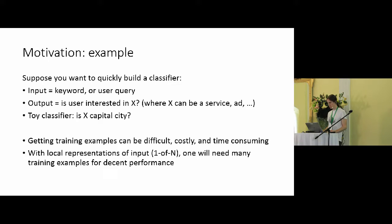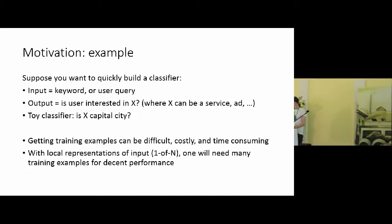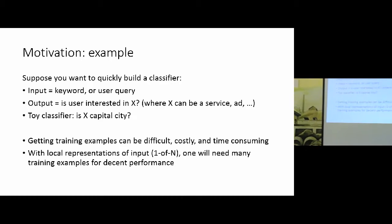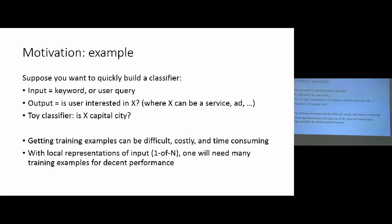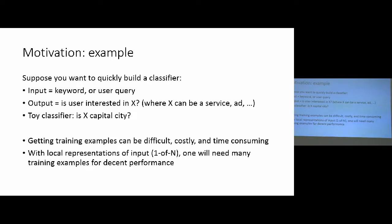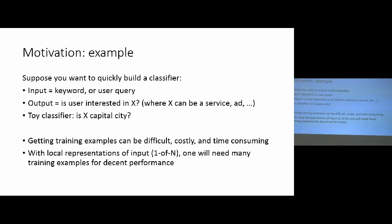So, for the motivation, why would we want to consider such representations? Suppose that you want to quickly build a classifier. For example, you are working in a company and you are given a new task and you have like two days to accomplish the task. Or maybe you are working in a startup and want to get something quickly. So, you will get some input text, which can be some keyword or it can be a user query. And you are supposed to build some classifier that will say, for example, if the keyword was a capital city of some country or not. So, just a binary classifier.